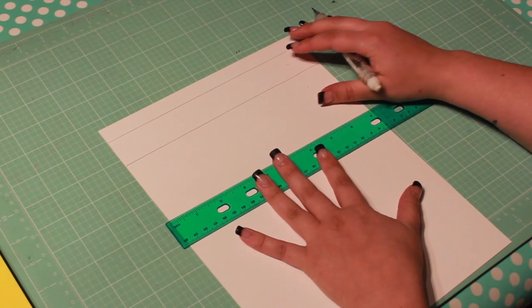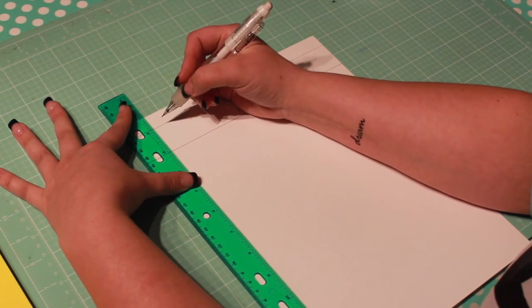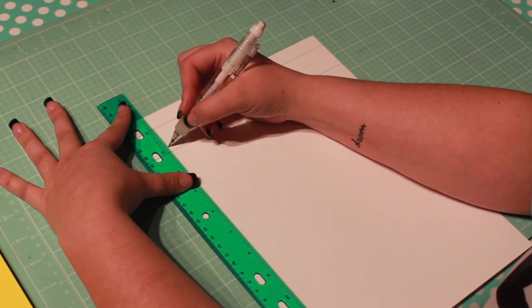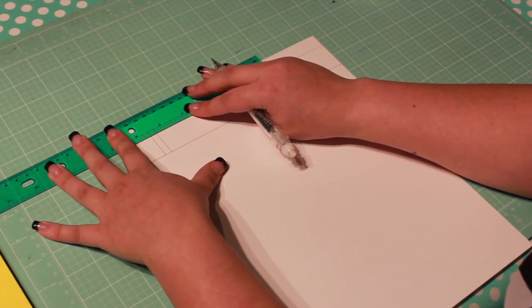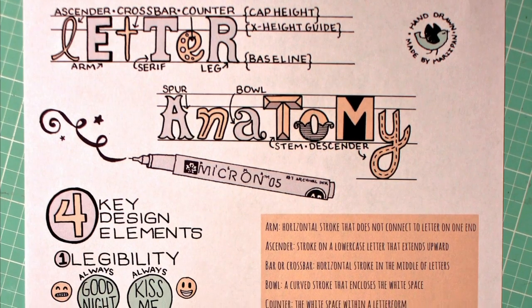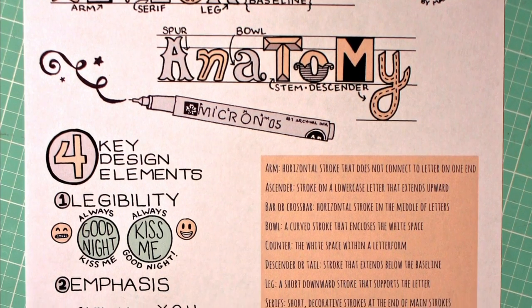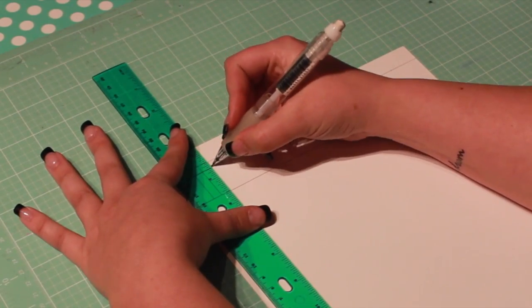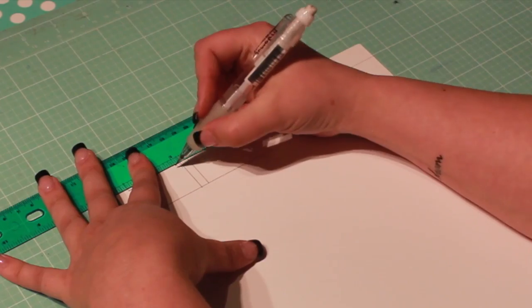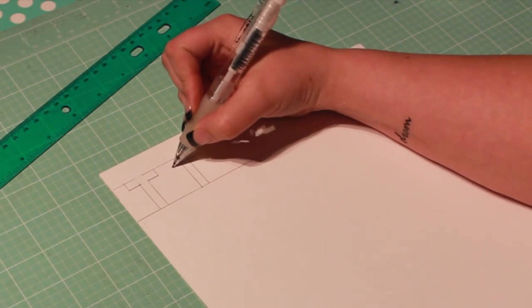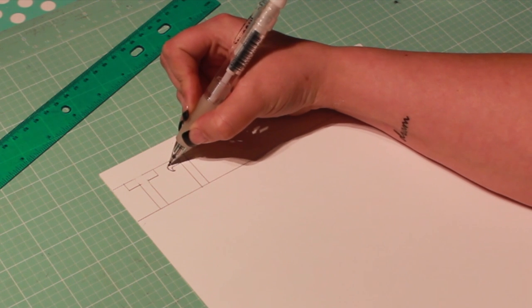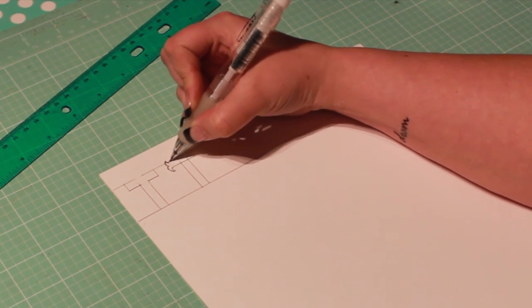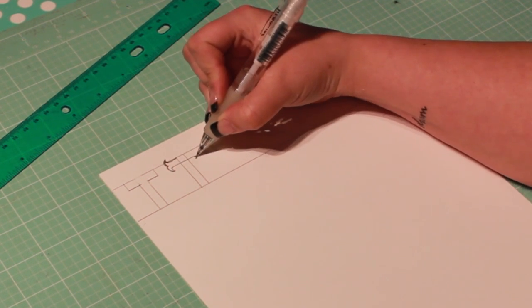We'll begin by practicing one of the easiest letters, T. As I work, I'll refer to different elements of the letters. I don't have enough time to cover all of the terminology in this video, but I've created a free PDF for you to print as a reference. I started with a simple sans serif block letter. Now let's try one with decorative serifs. I've had to speed up the footage so I can cover more information, but go ahead and take your time.